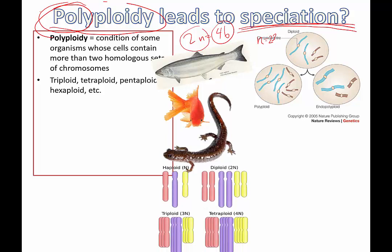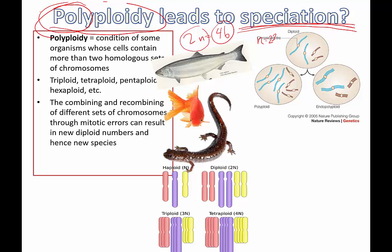If you have three copies of each chromosome, it's called triploid; four is tetraploid, and so on — pentaploid, hexaploid. The combining and recombining of these different sets of chromosomes, usually through mitotic errors (not intentional), will actually produce new species. Even though they may only use instructions from a few chromosomes, the extra copies that cause polyploidy can, by definition, lead to a new species.